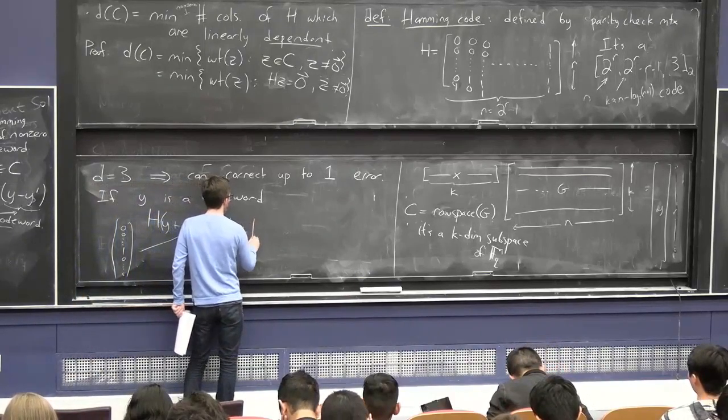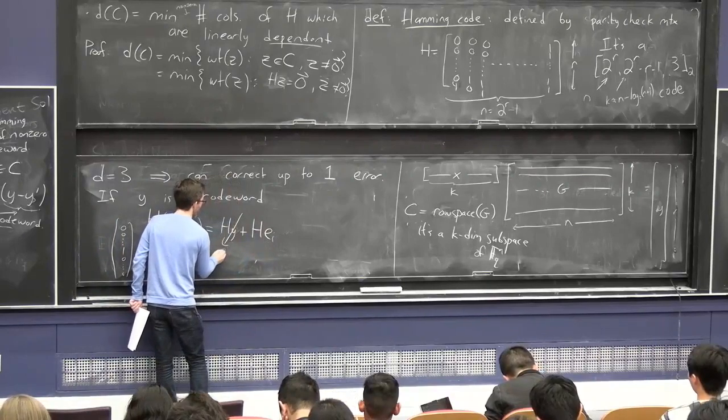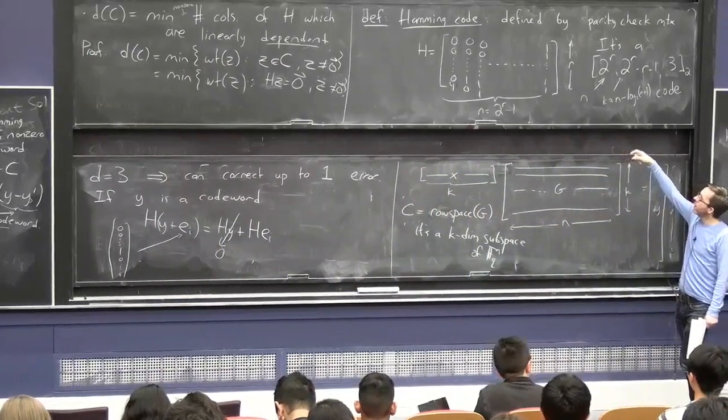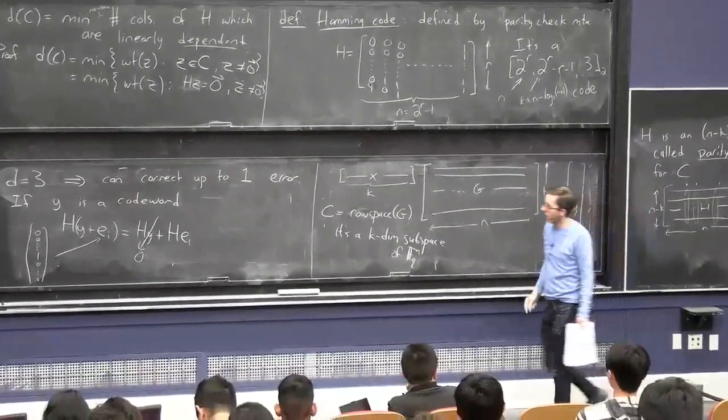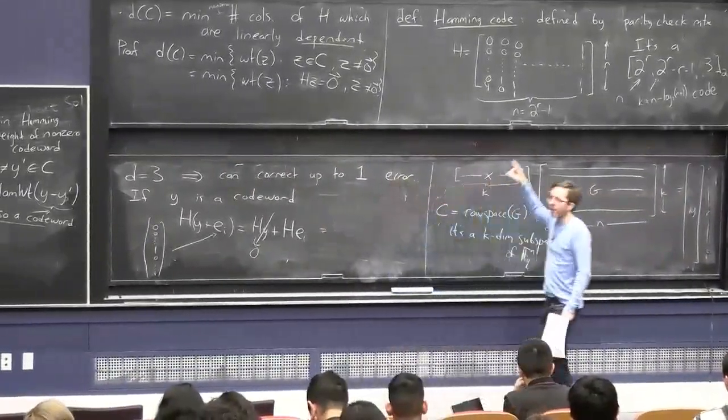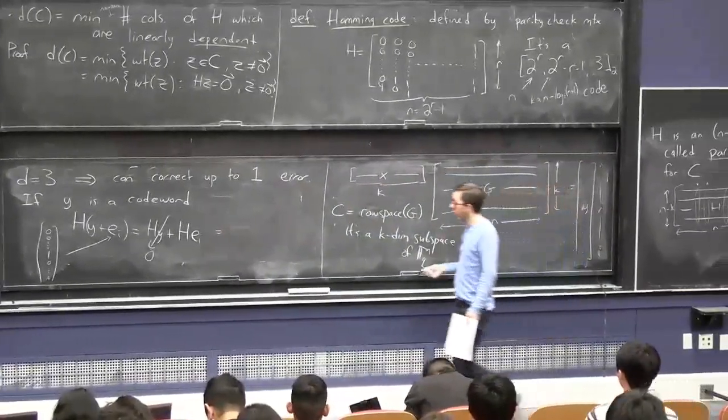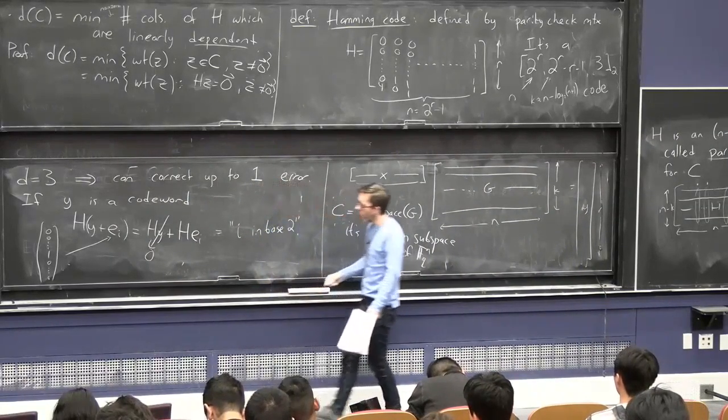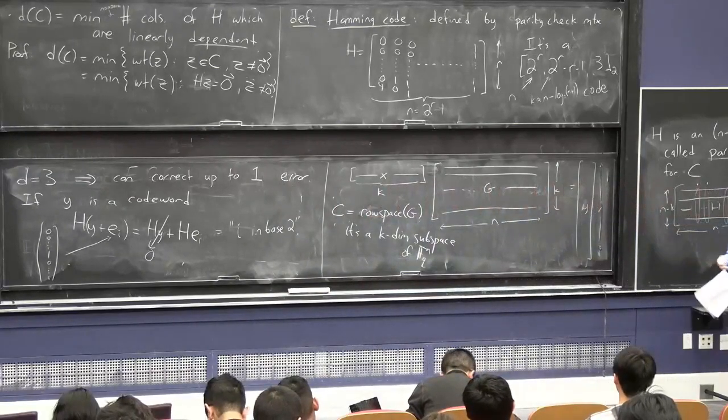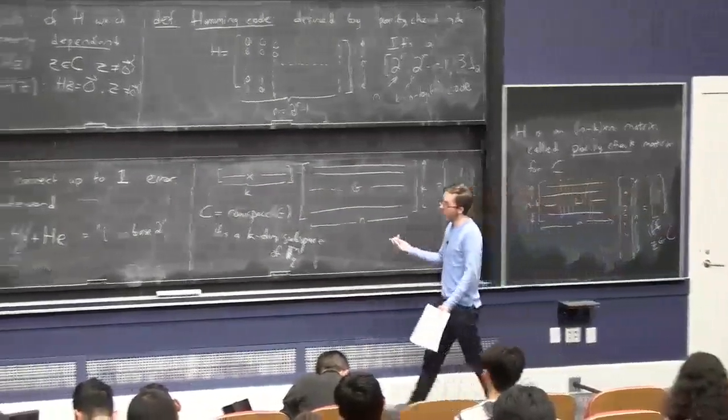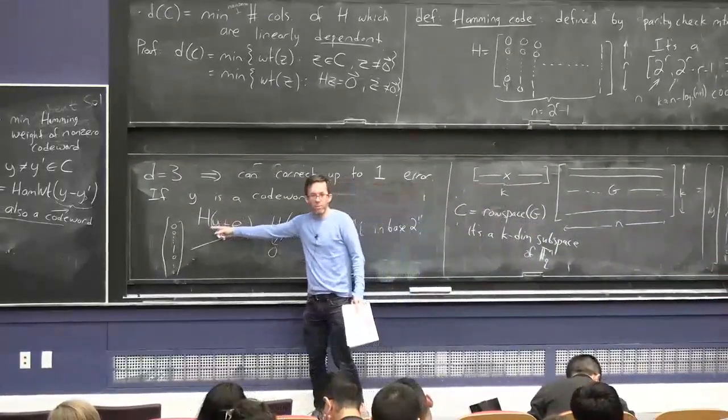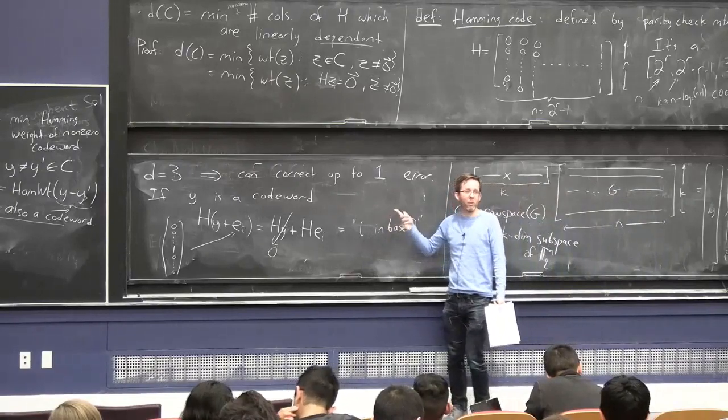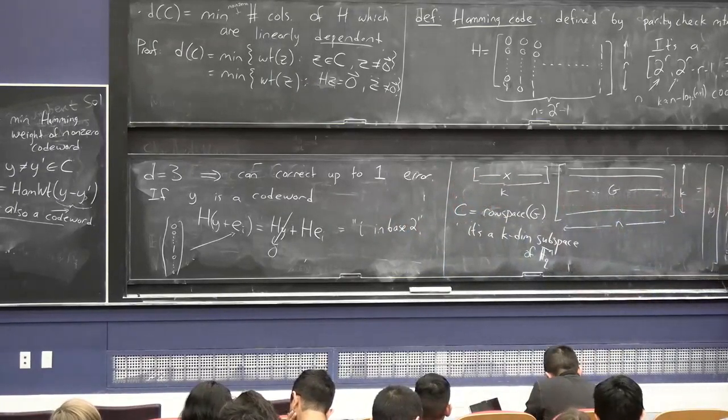Now, let's look what happens if we think of this as our received word, Y plus EI, and we just multiply it by the parity check matrix, H, this matrix over here. Well, we have HY plus HEI. This is zero, because Y is a code word. And what happens if we multiply this H by EI on the right? It just picks out the i-th column of H. And what is the i-th column of H? It's actually the number I written in base two. So it's I in base two. So this is actually quite slick. If you know that your received word is guaranteed to receive up to one bit flip, either zero bit flips or one bit flip, you take your received word Z and multiply it by the parity check matrix. If you get the all zero string, then you're like, great. This was an uncorrupted code word. Otherwise, you get a binary string that tells you exactly where the bit flip occurred. And then you can decode by just flipping that bit back.